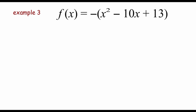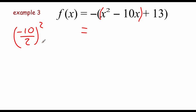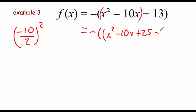Last example for this video — more completing the square. This one already has an a value of 1; it looks like somebody already factored out a negative 1 out in front, which is good. We group the first two things in our parentheses for the adding zero, completing the square process. We need to look at this b value: we've got negative 10. We divide that by 2 and square it — negative 10 divided by 2 is negative 5, and negative 5 squared is 25. So we add 25, but then subtract 25 right away, close parentheses, and the plus 13 is on the end.